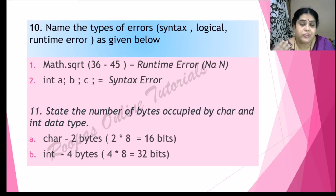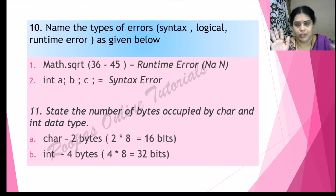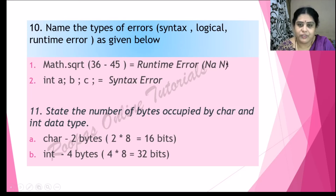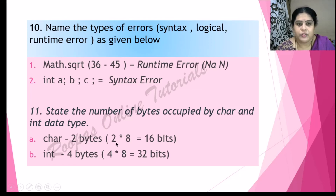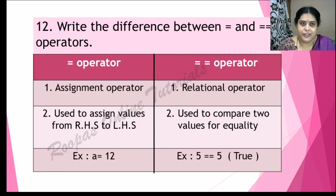State the number of bytes occupied by char and int data types. You should know the memory sizes for char, int, float, double, and boolean. Char is 2 bytes — if asked in bits, multiply by 8, so 2 × 8 = 16 bits. Int is 4 bytes, that is 4 × 8 = 32 bits.